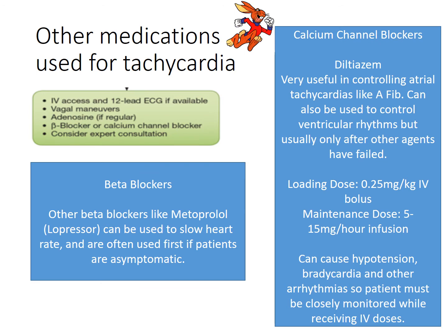Other medications used for tachycardia — these aren't new to you. Beta blockers: metoprolol, which is selective, is sometimes used for tachycardia before going through the whole algorithm, since it's been around a long time and can slow the heart. For narrow complex tachycardia, they'll sometimes give a beta blocker first. Calcium channel blockers like diltiazem — also used for hypertension — are very useful in controlling atrial tachycardias like atrial fibrillation. You're going to see diltiazem a lot with afib and atrial flutter patients.